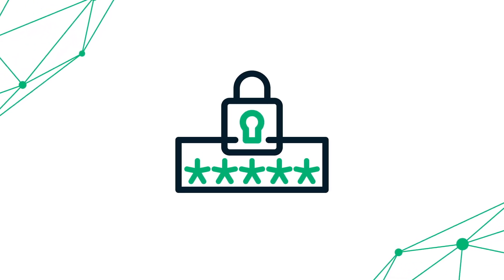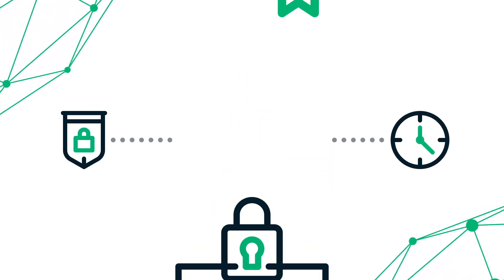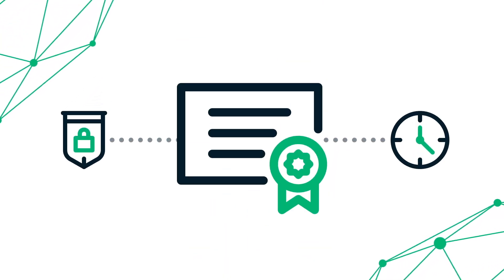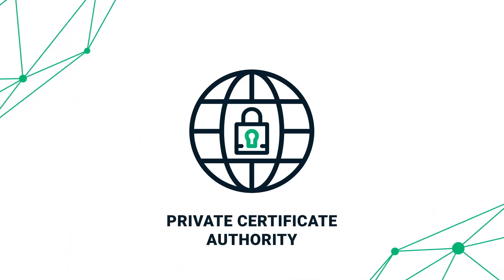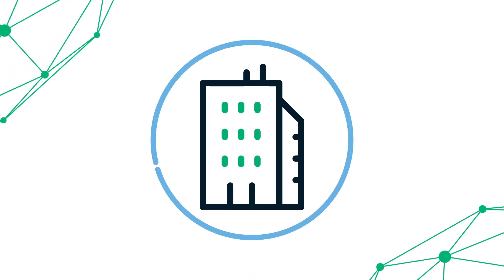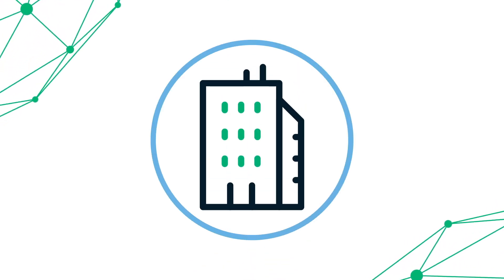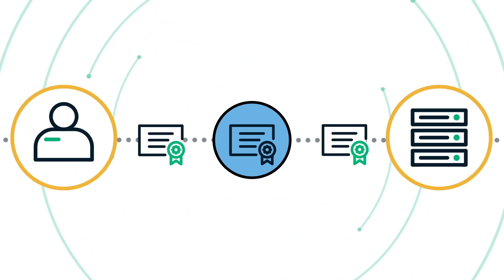Digital certificates improve security and productivity by replacing passwords in the enterprise. A private certificate authority functions much like a publicly trusted CA, but is exclusively run by an individual enterprise. The private CA allows organizations to create their own private route capable of issuing private certificates to their internal users, servers, and devices.